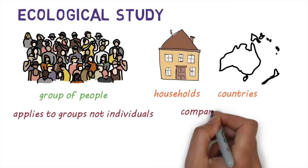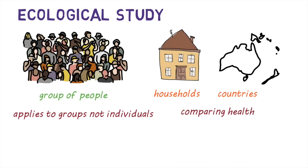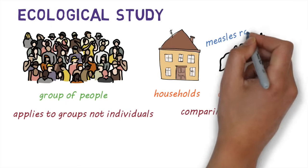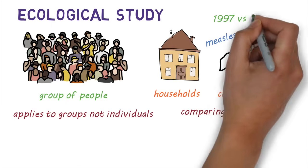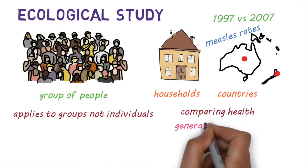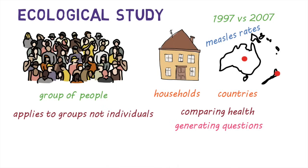Ecological studies are useful for comparing the health of populations in different places, such as measles rates in Australia and New Zealand, or at different times. They're also useful for generating questions and highlighting issues that can lend themselves to future investigations or studies.